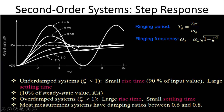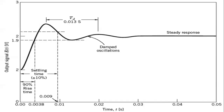That covers the step response of a second order system — giving a step input and the output responds differently for different damping ratios. Damping is the absorption of oscillations. The system first overshoots, then comes back, and after some time reaches a steady state value. This transient region is called the settling time for the signal.